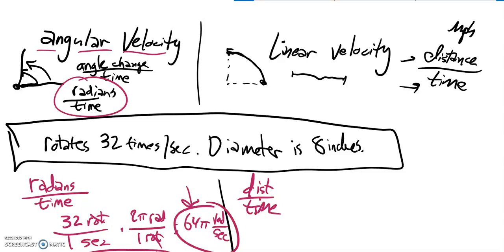It rotates 32 times in a second. So this is 32 rotations in one second. Each rotation is a certain distance.